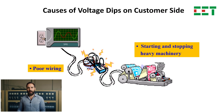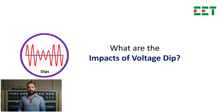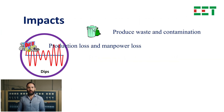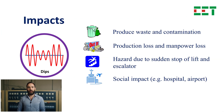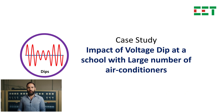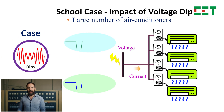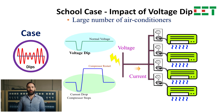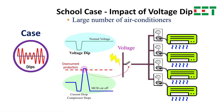Voltage dips can affect connected equipment, causing sensitive circuits or MCBs to trip, leading to operational stoppages. For example, voltage dips in high-rise buildings during heavy air conditioner use can cause overcurrent and MCB trips, resulting in blackouts.